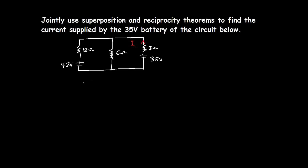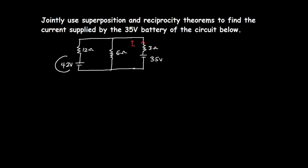From superposition, we can calculate the current in this branch — which is the current supplied by the 35-volt source — by considering each of the sources acting alone. We consider the 42-volt source acting alone, short-circuit the 35-volt source, find the current in this branch, then short-circuit the 42-volt and use the 35-volt source to find the current in this branch, then add the two current values.